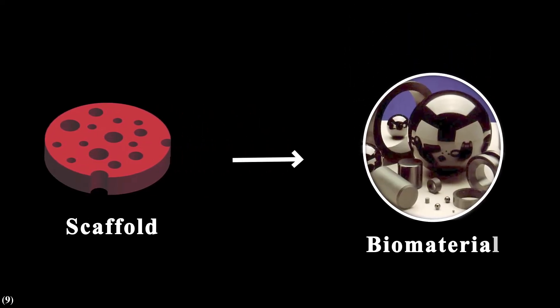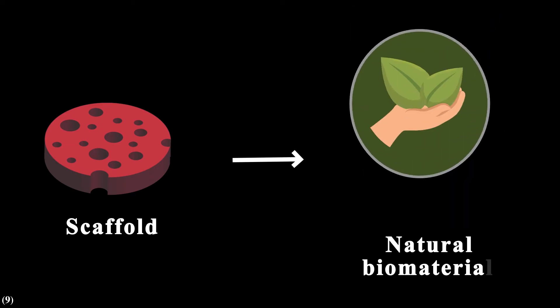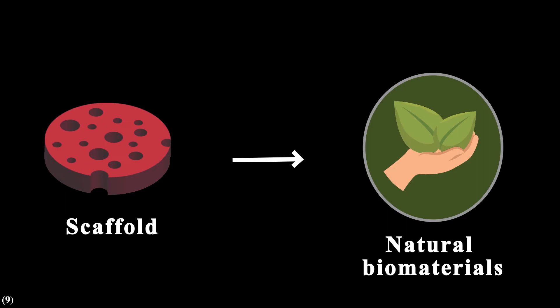Let's imagine that you want to build a scaffold in the lab. First, you need to consider which biomaterials you can use. There are a lot of options, and all of them have their own pros and cons. We can extract biomaterials from natural resources like plants, animals, or even humans.